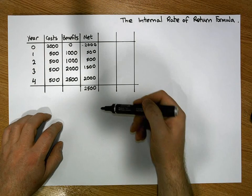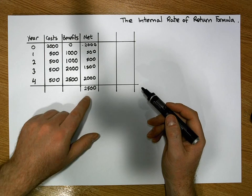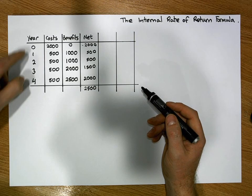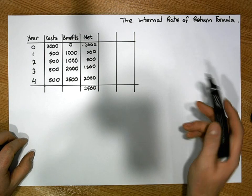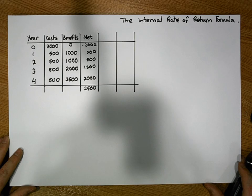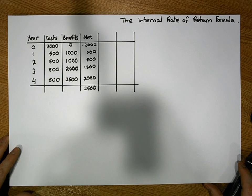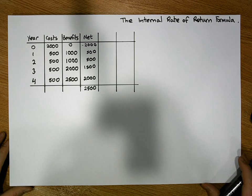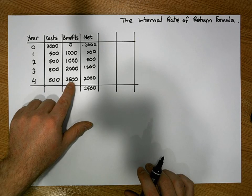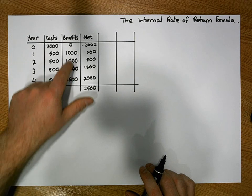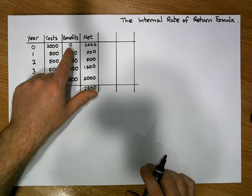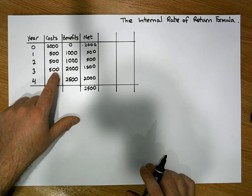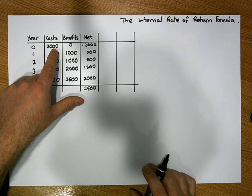This gives us a total net position over the four-year period of €2,500. So from a naive perspective, this project would earn €2,500 profit after four years. But one thing we haven't taken into consideration is the present value, or the time value of money. €2,500 in four years' time isn't the same as €2,000 today. Similarly, a cost of €500 in three years' time isn't the same as a cost of €2,000 today.